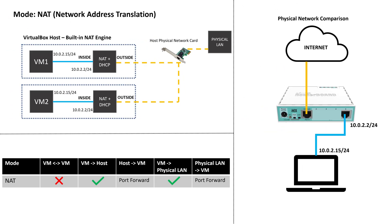Let's look at the NAT network mode. This mode is enabled for all virtual network adapters by default. VirtualBox has a built-in NAT engine that includes network address translation and DHCP server functionality. For those of you that don't know what network address translation is, in the simplest terms, it's a way to map a private IP address inside a local area network to a public or outside IP address on another network or the internet.